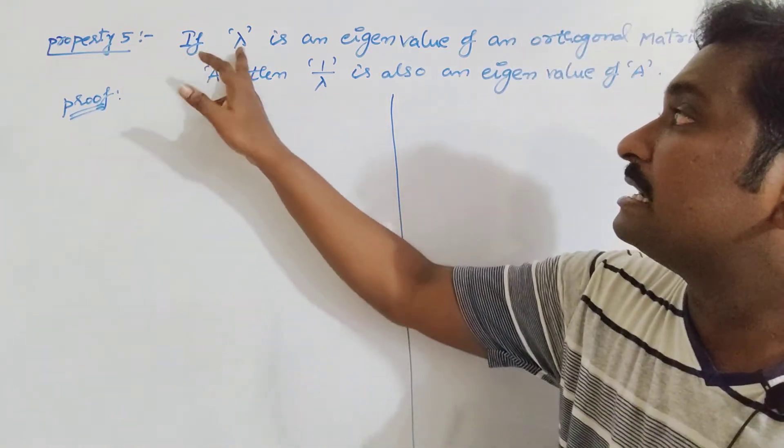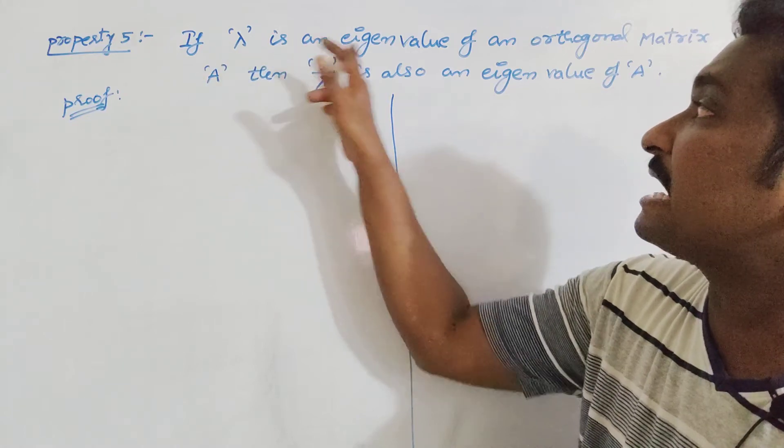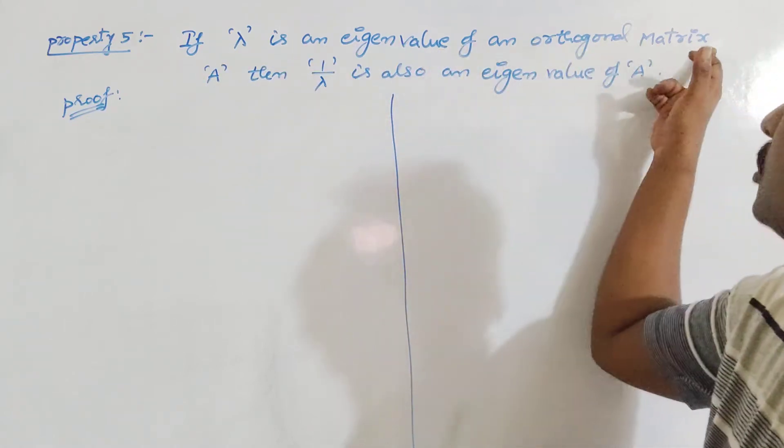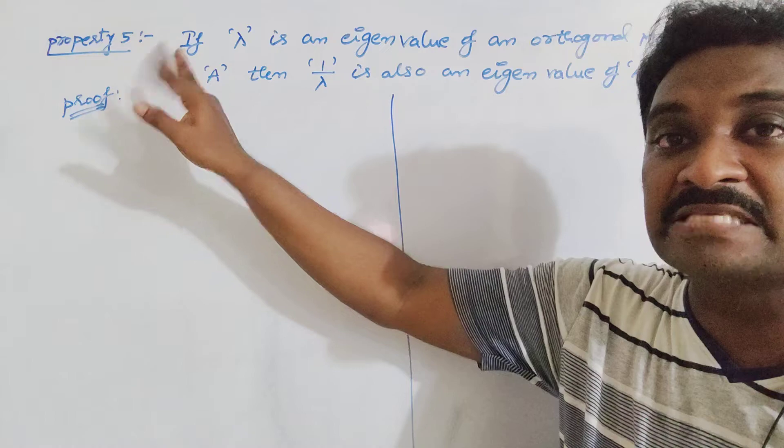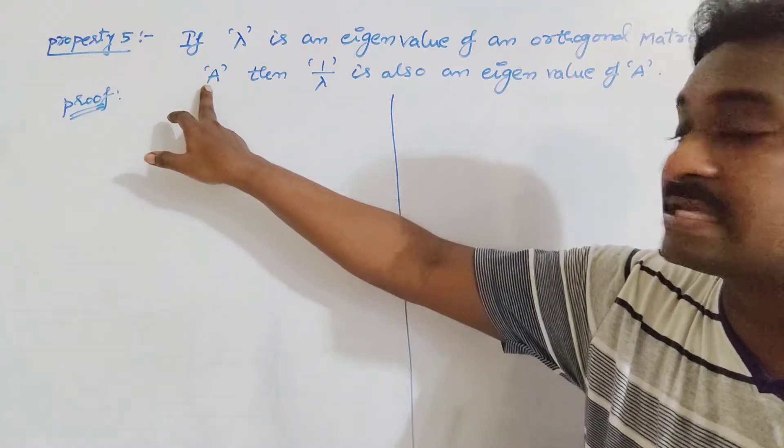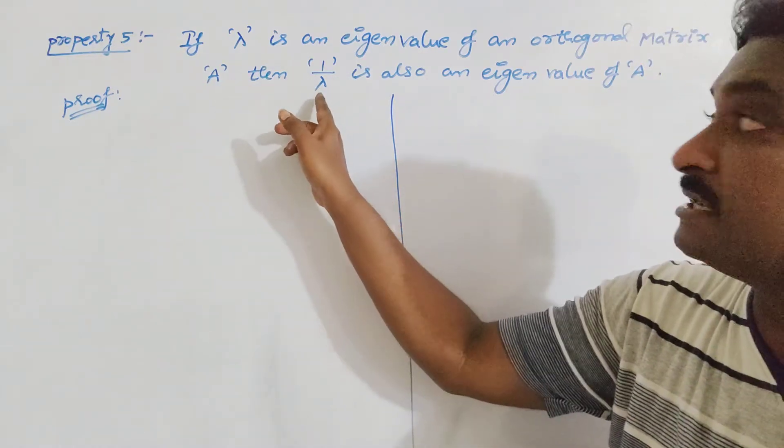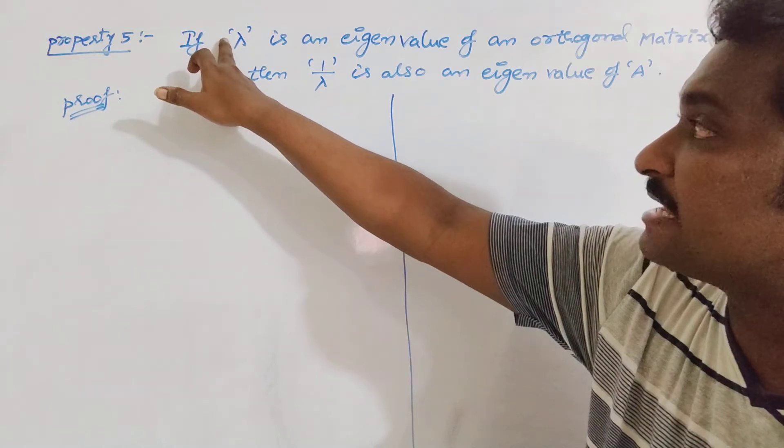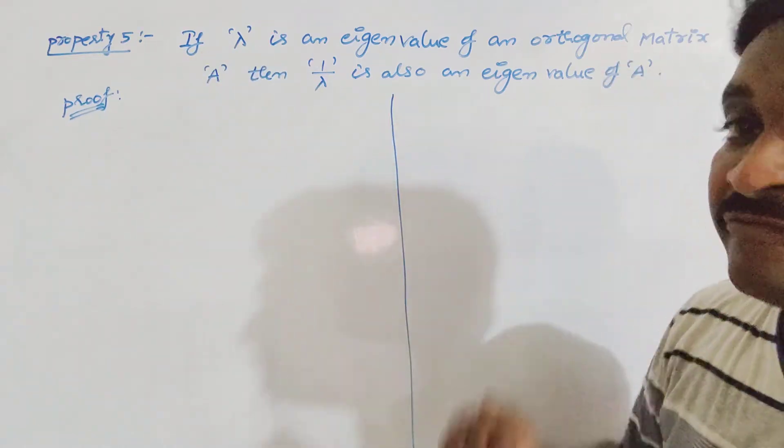If lambda is an eigenvalue of an orthogonal matrix A, then 1 by lambda, nothing but reciprocal of this eigenvalue, is also an eigenvalue of A.